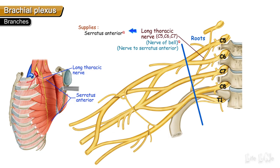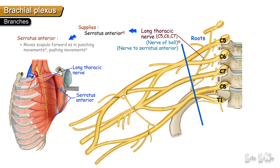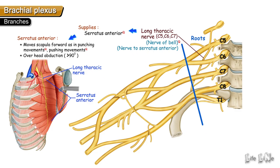The serratus anterior is inserted on the costal surface of the medial border of the scapula. When it contracts, it pushes the scapula forward, helping in punching movements, pushing movements, and overhead abduction. Because it assists in punching movements, serratus anterior is also called the boxer's muscle.